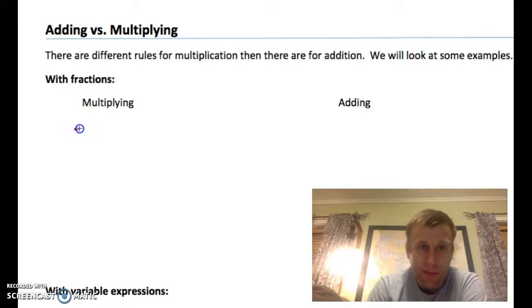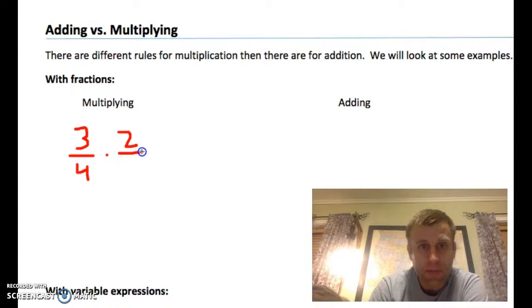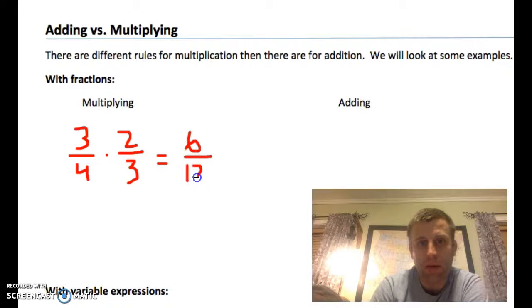So, multiplying, here's just some quick examples. Three-fourths times two-thirds. They don't need to be like denominator, just multiply across. You guys probably know that that's going to come up to be six over twelve, which is just a half. So, the point is, they don't have to be like denominators in order to multiply.